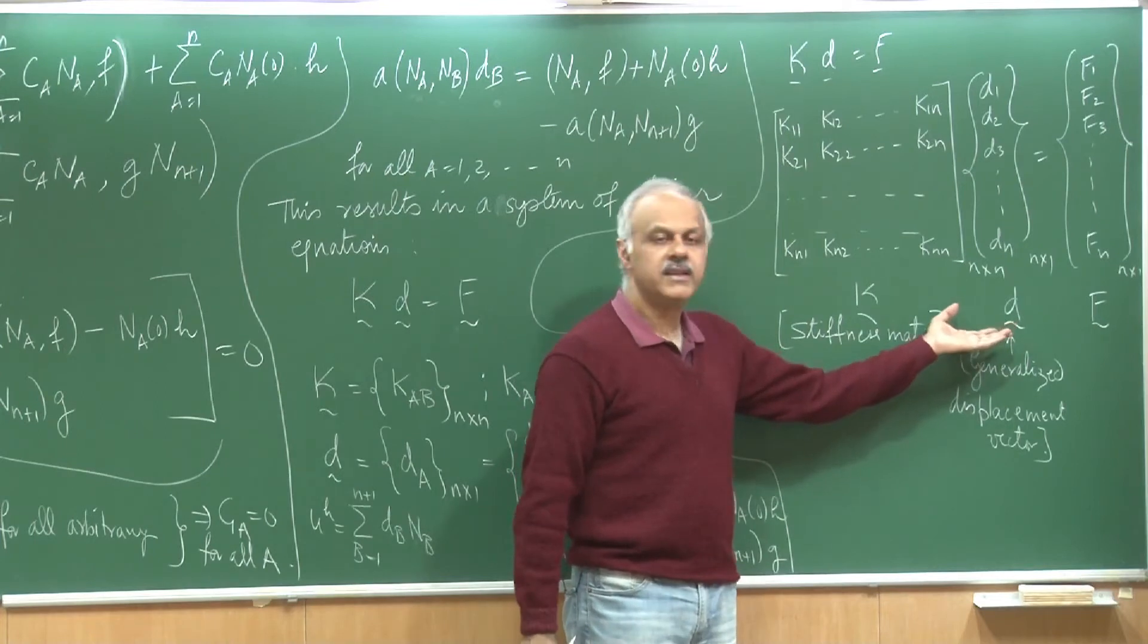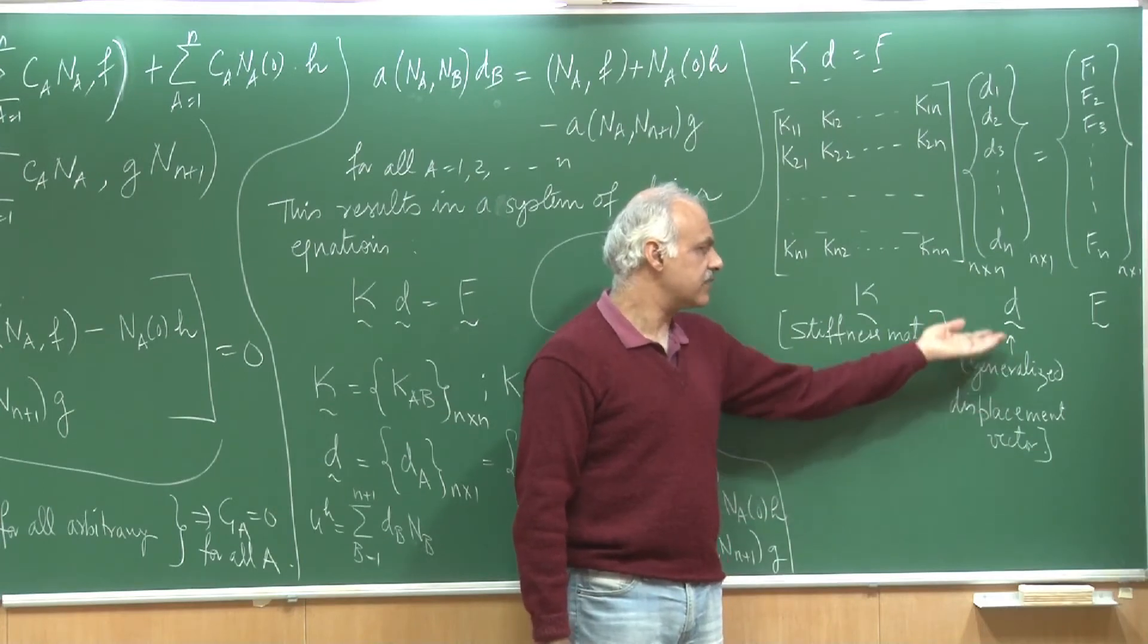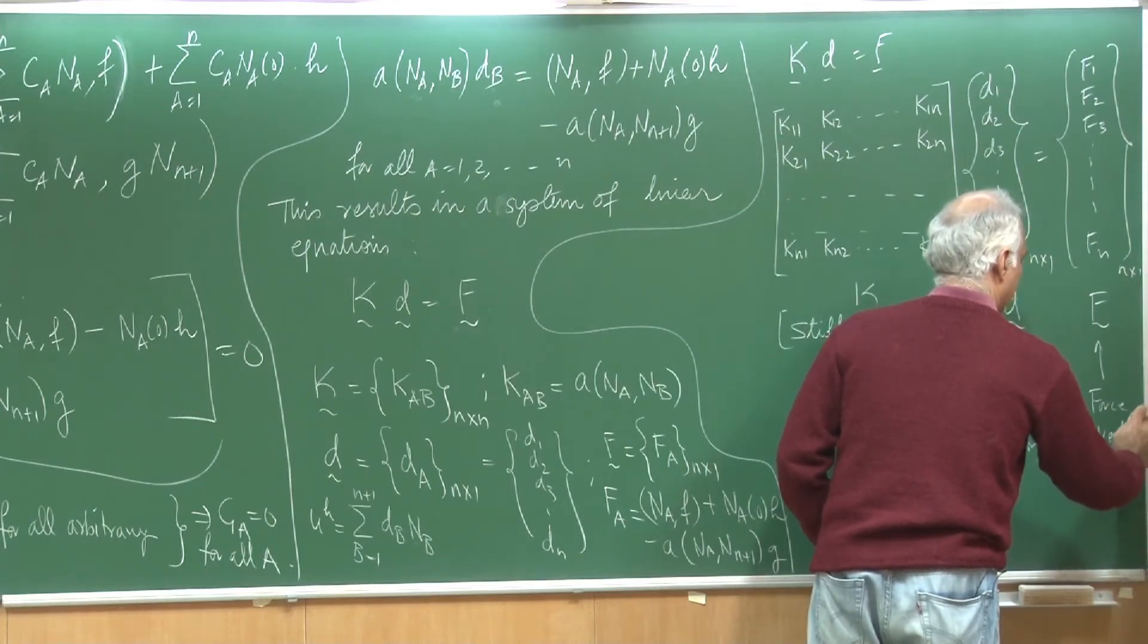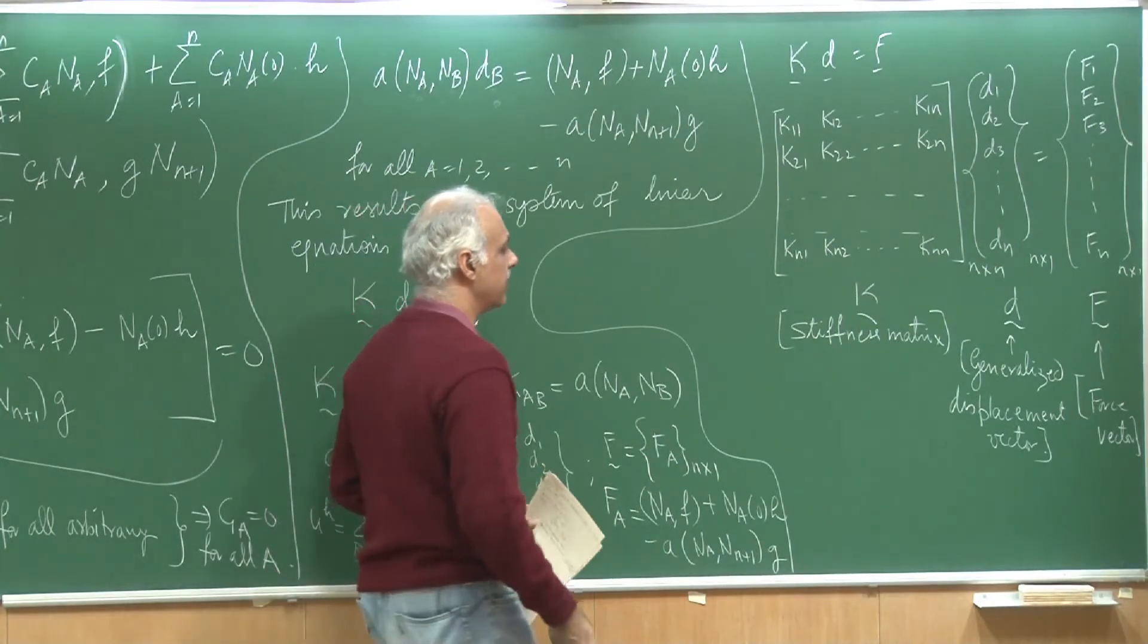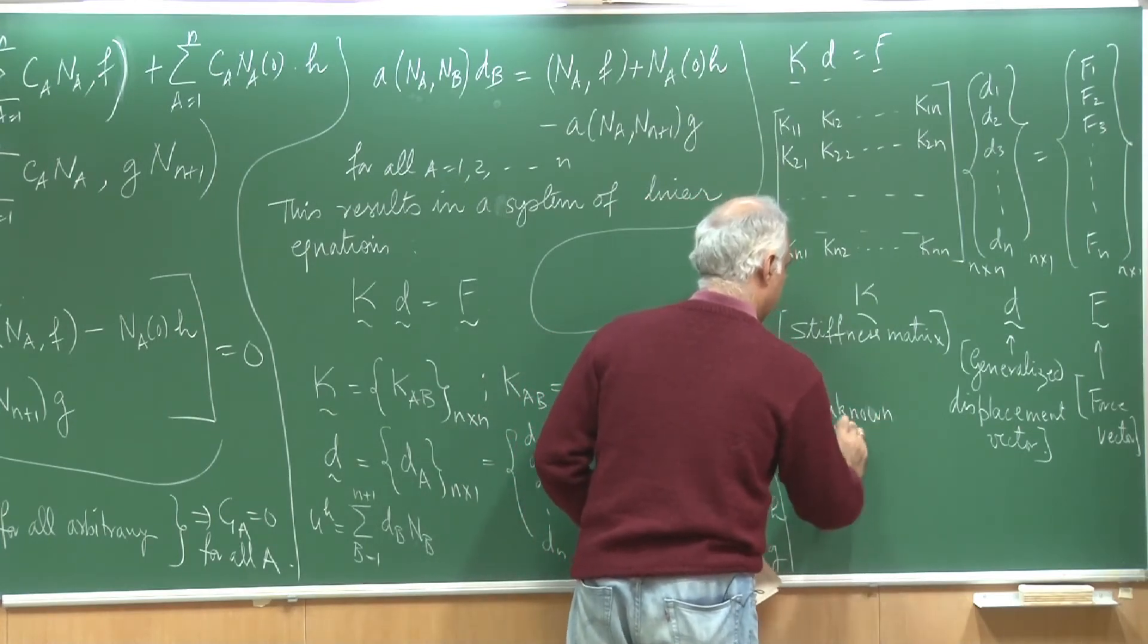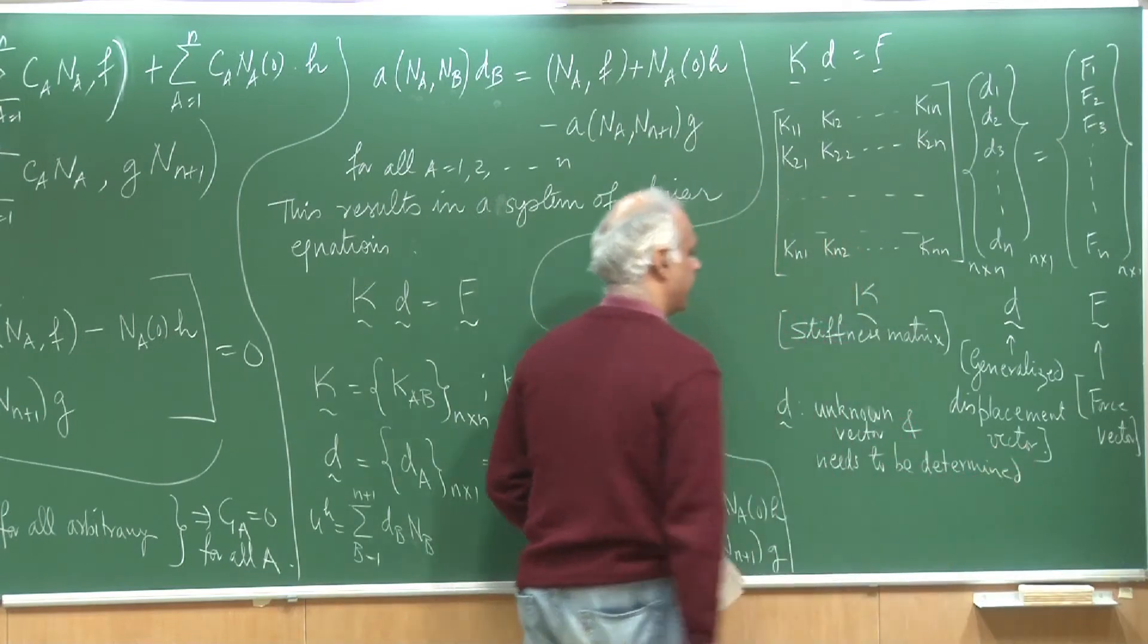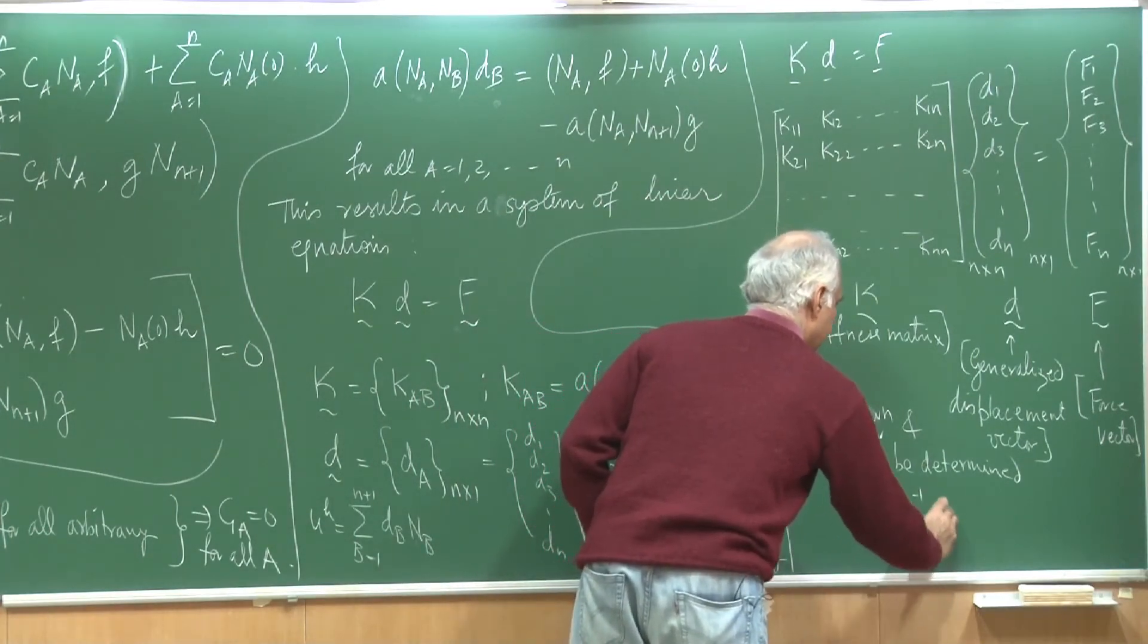In fact, in fluid mechanics it would be the velocity vector, if you are solving in terms of velocity of the fluid or the pressure. In case of heat transfer, it could be temperature field. And f is known as the force vector. These are just names that I have stuck on. The displacement is what is the unknown, so the d vector is the unknown vector and needs to be determined. And it is very easy to solve for that. In fact, you can write that d is simply K inverse f.